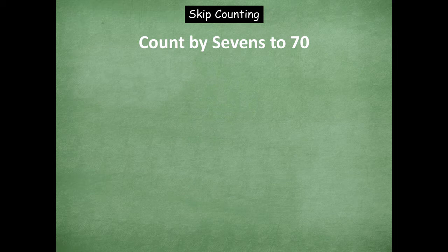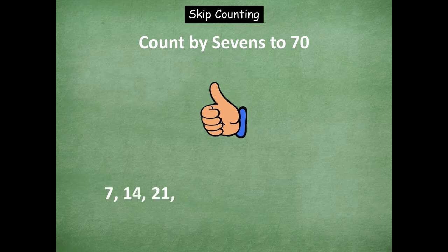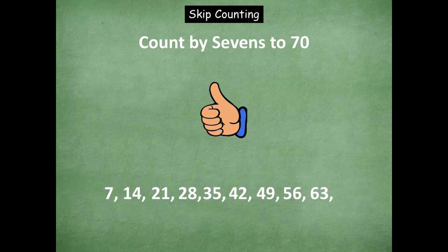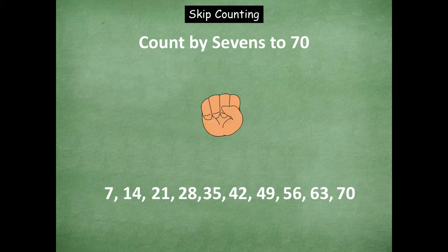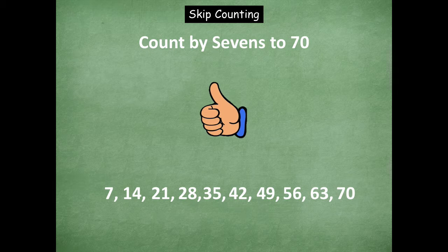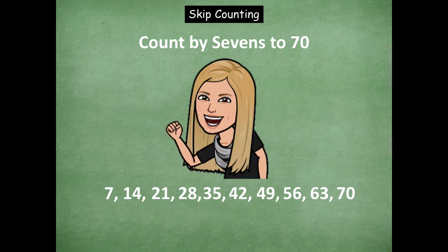Now we're going to move on to counting by sevens to 70. Counting up: seven, 14, 21, 28, 35, 42, 49, 56, 63, 70 — stop. Counting down: 70, 63, 56, 49, 42, 35, 28, 21 — stop. Now counting back up: 21, 28, 35, 42, 49, 56, 63, 70. Great job with that one, friends.